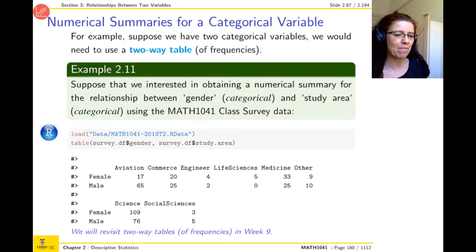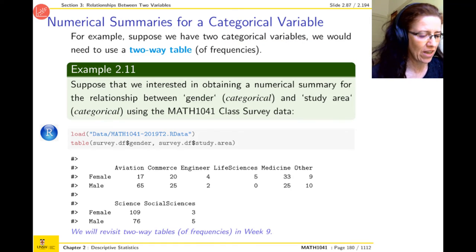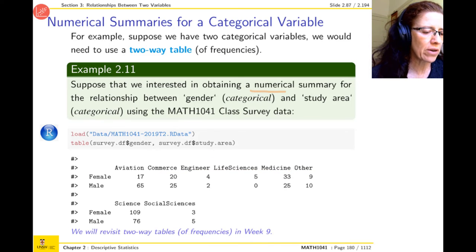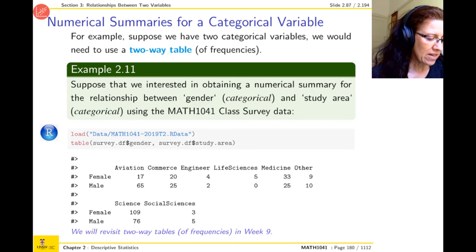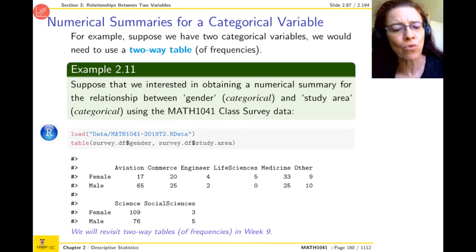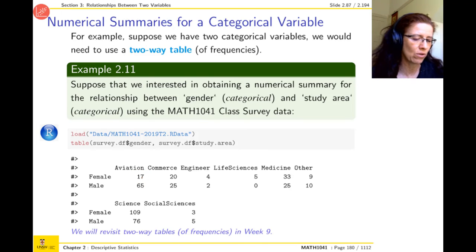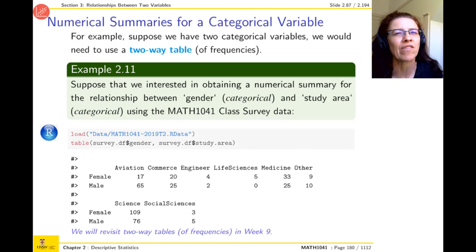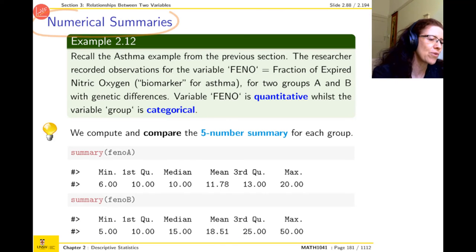Let's look at an example with two categorical variables — sex and study area. If you want a numerical summary for the relationship between sex and study area, that would be a two-way table. The way to do this in R Studio would be to first load the data, and then the table function will draw this table and calculate all these numbers for you. The table didn't fit on one line, so that part would normally come there in a normal table.